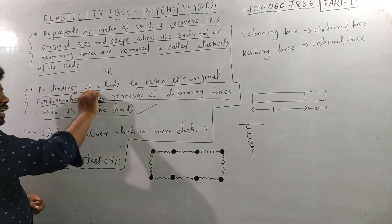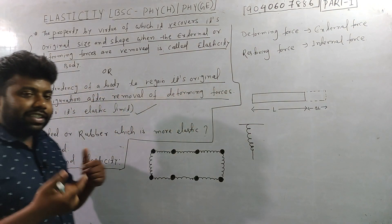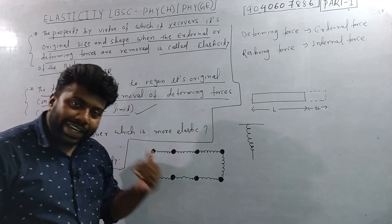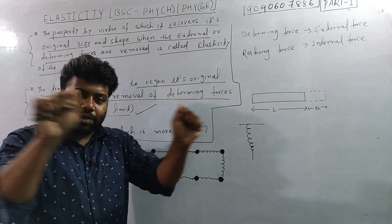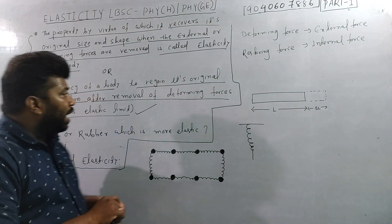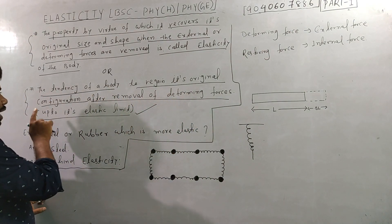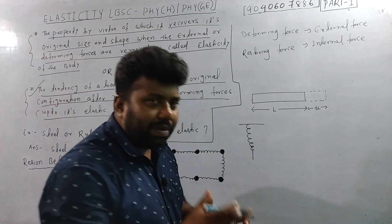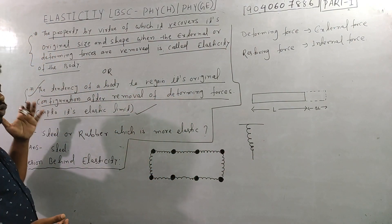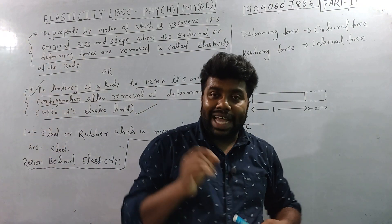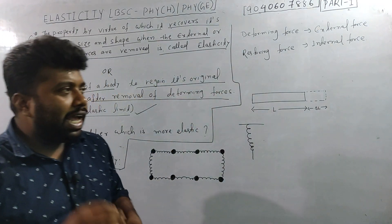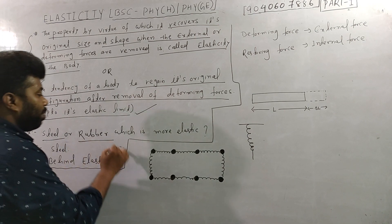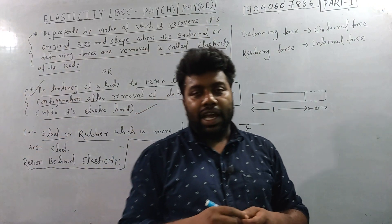The tendency of the body to regain its original configuration — this is a good property of a body. When an external force is applied, the body changes shape, and after removing the deforming force, it is called elasticity. To compare: steel and rubber — rubber is more elastic than steel in everyday usage, as rubber deforms and recovers more easily.